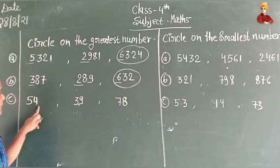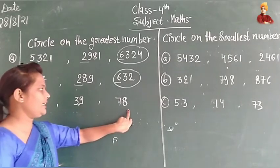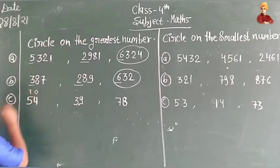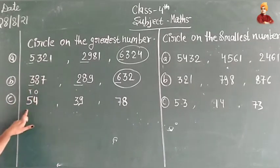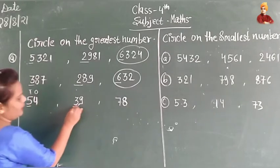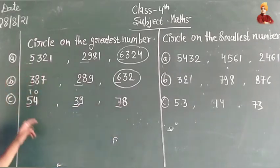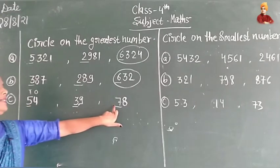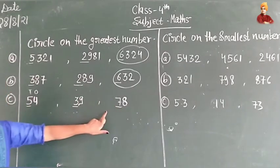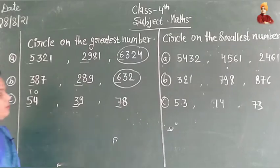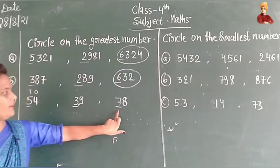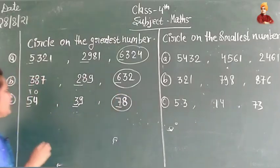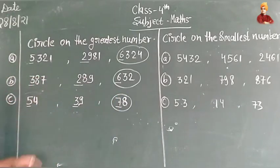The third example has numbers 54, 39, and 78. These are two-digit numbers with tens and ones places. So we look at the tens digits first: we have 5, 3, and 7. The greatest of these three digits is 7. So our greatest number is 78.